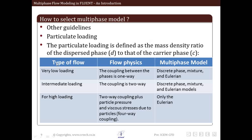Based on this, there are three types of categories: very low loading, intermediate loading, or high loading. When we have very low loading of the disperse phase, generally the particulate loading number is very low. In such cases, the coupling between the phases is one-way—that is, only the continuous phase is affecting the disperse phase. The disperse phase is not affecting the flow of the continuous phase. In such cases, we can use the discrete phase model, the mixture model, or the Eulerian model.